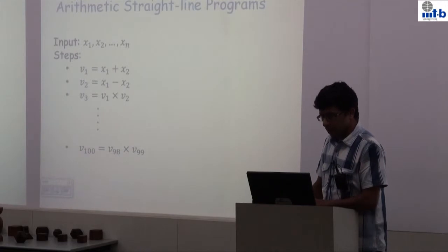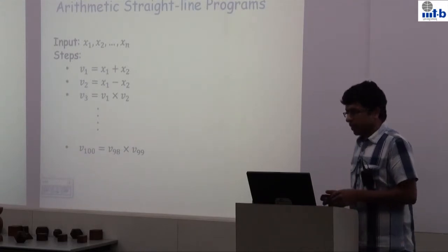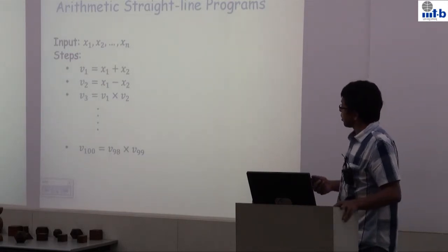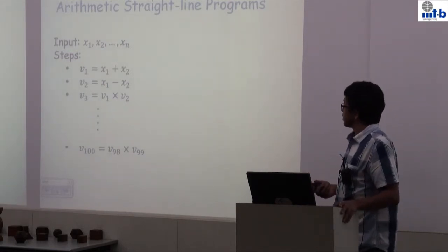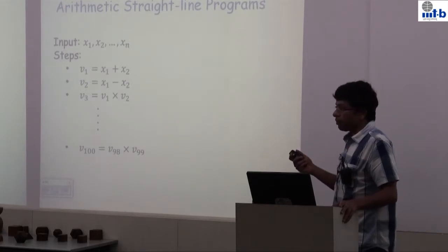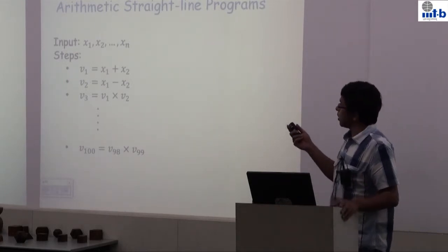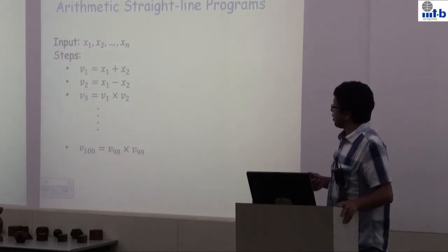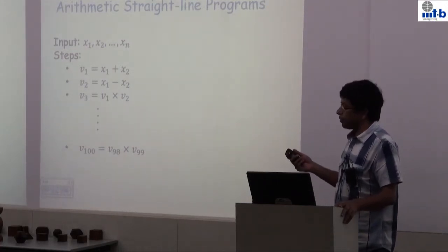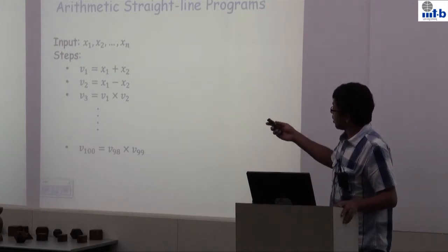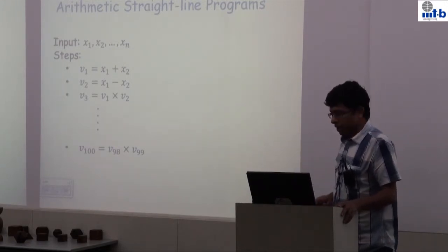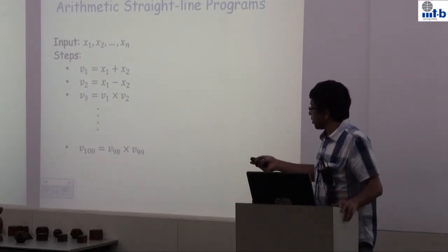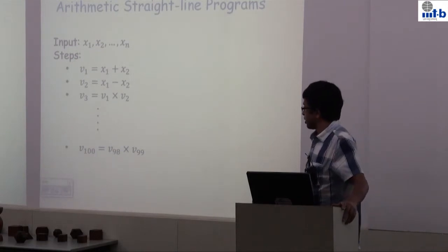The main thing we will be concerned with are arithmetic straight line programs, alternatively also called arithmetic circuits. You have a bunch of inputs x1 through xn — think of them as integers or complex numbers. The operations that you are allowed are addition, multiplication, and subtraction. Our straight line program will compute via a sequence of additions, multiplications, and subtractions.